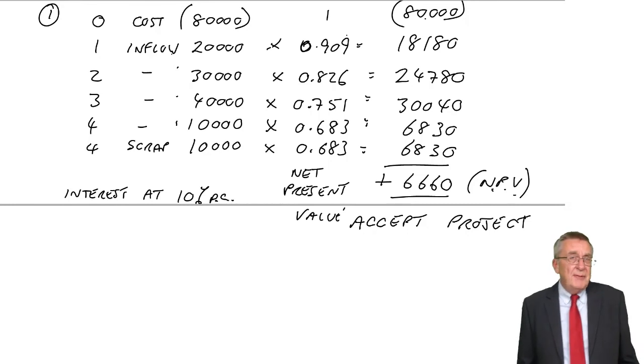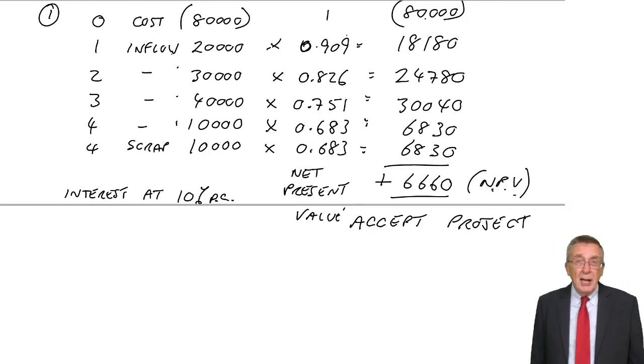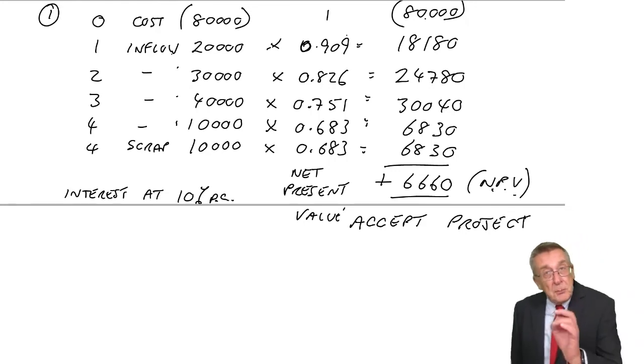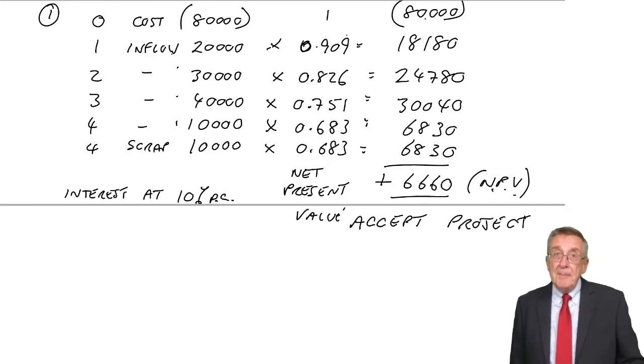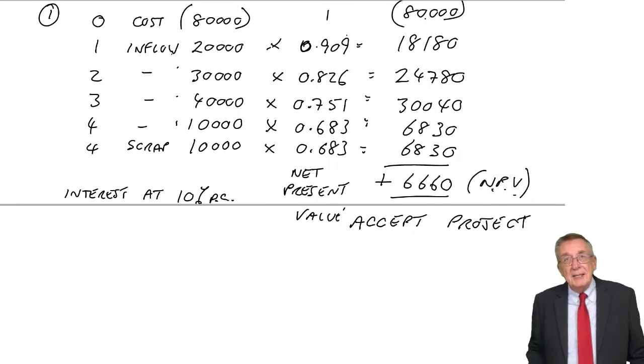And so if the rate of interest turned out to be 15%, the project will be a lot worse. The net present value will be a lot lower. If it was still positive, no problem. We're still happy we've done it. But if it ever went negative, we'd have made the wrong decision.